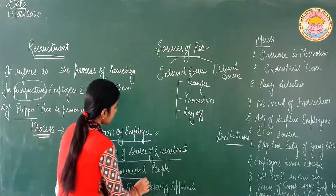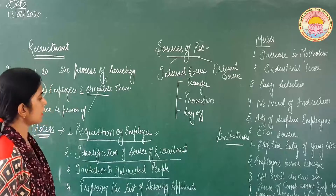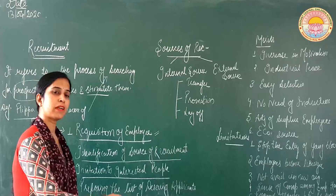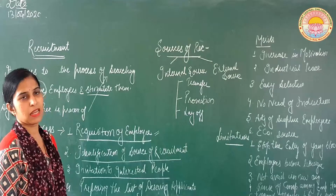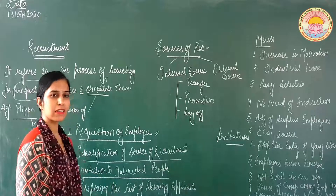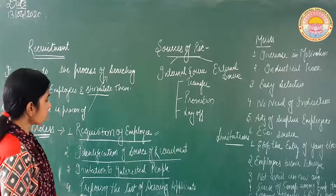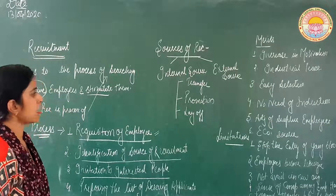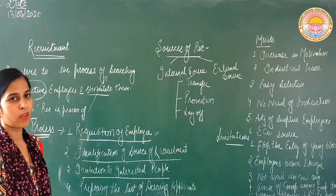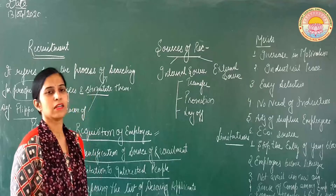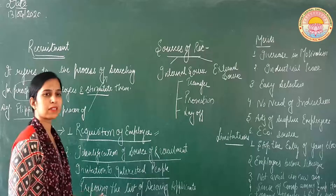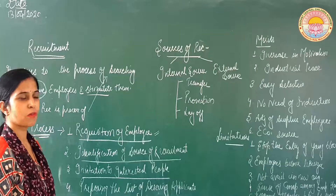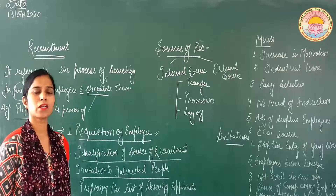Phir third aata hai: invitation to interested people. Ab humne resources ko identify kar liya ki hamari organization mein kaun kaun se sources hain. Toh phir personal manager kya karega — jo bhi interested people hain unko invitation dega ki woh hamari organization mein apply karay. Iske liye personal manager ek brief description, brief detail prepare karta hai. Us detail mein mention karta hai: number of vacancies available, nature of job, qualification of employee, selection criteria, detail of salary, experience. Yeh sara detail prepare karta hai personal manager, aur jo format prepare kar raha hai woh bohat jyada lengthy na ho — simple aur clear language mein hona chahiye.